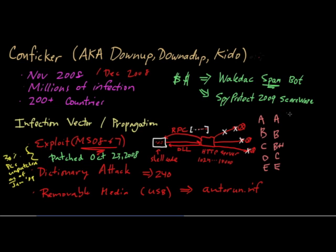And these variants were released at different times. Variant A came out in November of 08, as I mentioned earlier. B came out in December of 08. Variant B++ or C came out in February of 09. And then we had another variant in March of 09. And then the last variant, which is E, came out in April of 09.